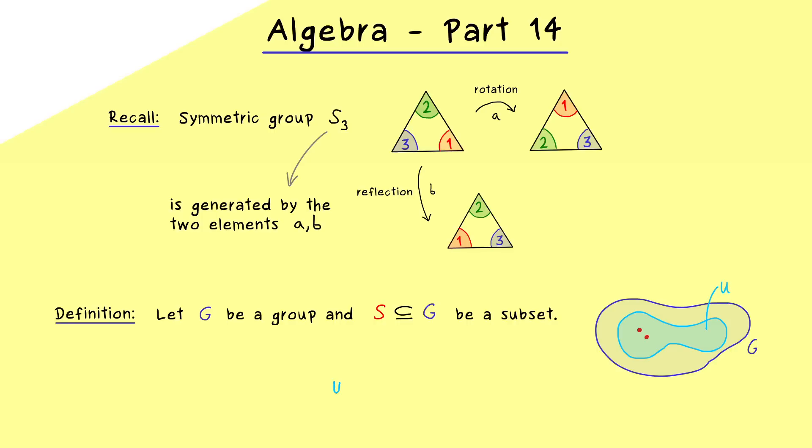This means the elements of S should lie completely in our subgroup U. Therefore this U has to satisfy 2 conditions. First, it has to be a subgroup of G. And second, the set S is also a subset in U. And now the idea is simply to consider all possible subgroups that satisfy these conditions.